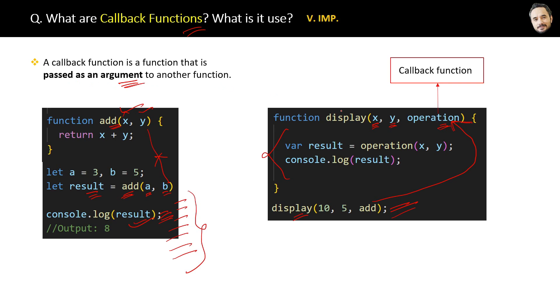I hope you got it. One more thing: this display function, which is receiving a callback function as a parameter, is called a higher-order function. Now the question is, why did we do all this? What is the advantage of using this callback function and higher-order function?